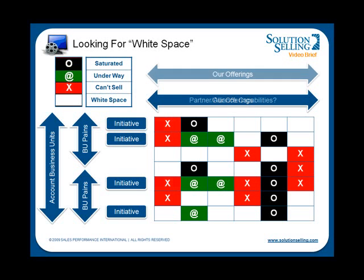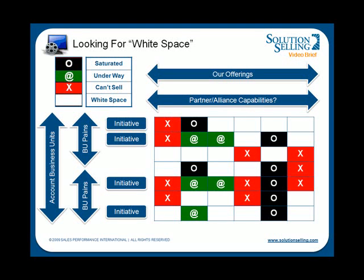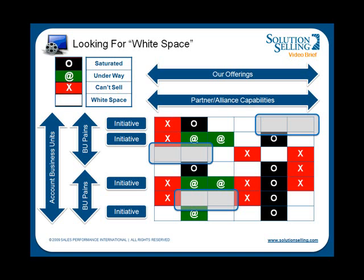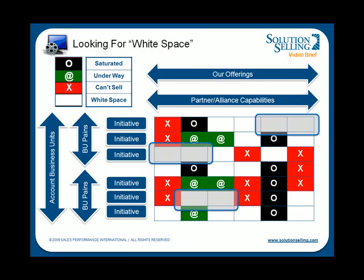We've blocked out quite a few intersections between business units and the offerings we can provide in this example — but note how many white spaces are left. Each of these represents a potential sales opportunity, each one in addition to our pipeline. By reviewing the white spaces, you should be able to find several potential new opportunities. Perhaps you can help fulfill a customer initiative with capabilities you had not previously considered, or help the customer address pains for which they haven't yet begun a formal project. In fact, you may be able to suggest new, high-value initiatives to the customer, thereby creating new sales opportunities that you can influence to create a buying vision that favors you.